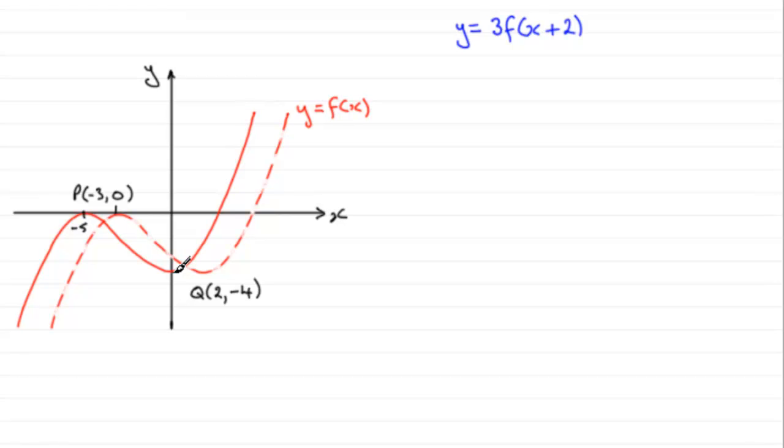And this point here comes from this stationary point, which is now at 0 minus 4. So we'll just put minus 4 there.